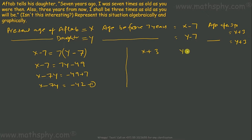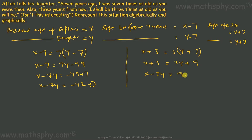For the second equation — after three years, if I multiply the daughter's age by 3 she would equal her father's age. So X plus 3 equals 3Y plus 9, which gives X minus 3Y equals 6. That's the second equation. So our algebraic representation is: X minus 7Y equals negative 42, and X minus 3Y equals 6.